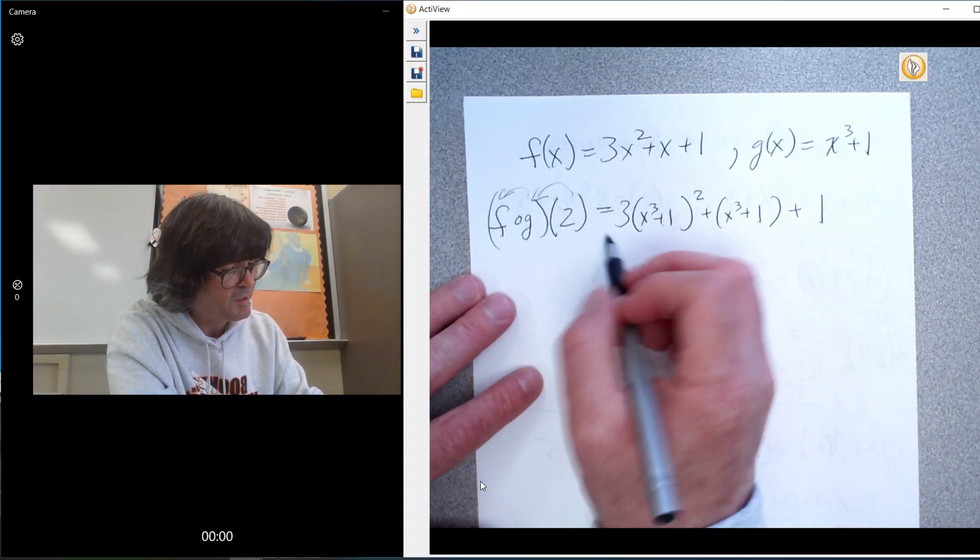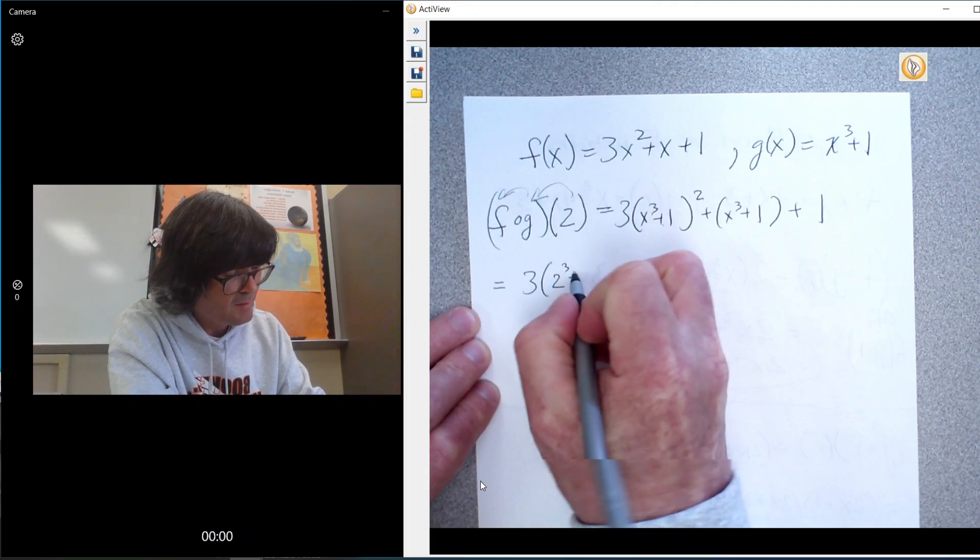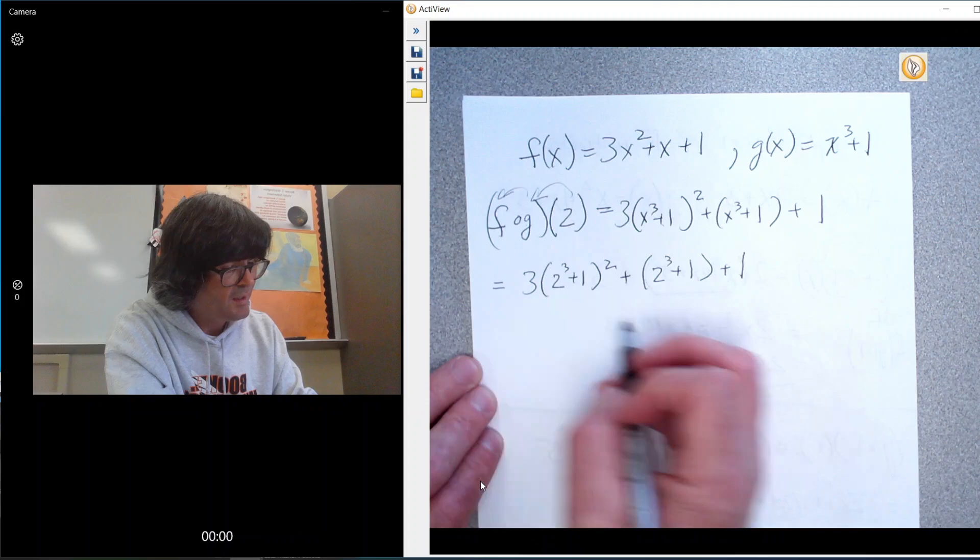And then you would have to put a 2 in everywhere you see an x. This is actually my least favorite way to do it. I prefer to put a number in at the front end, but I'll show you both ways.